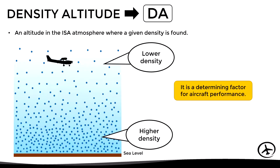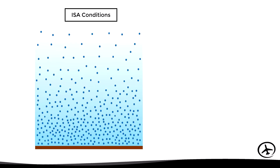It is important to understand the concept of density altitude. The ISA atmosphere is the main frame of reference. In the ISA model, at sea level we have a pressure of 29.92 inches of mercury and a temperature of 15 degrees Celsius.